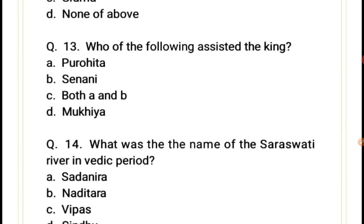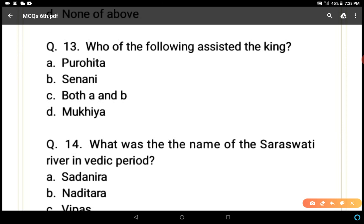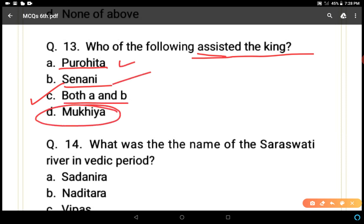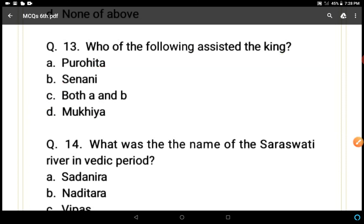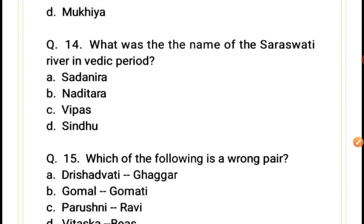Question 13: Who assisted the king in different types of ruling or governing work? Options: purohita, senani, both A and B, or mukya. Purohita and senani both assisted the king, so C, both A and B, is the correct answer. Mukya was not a post used at that time.